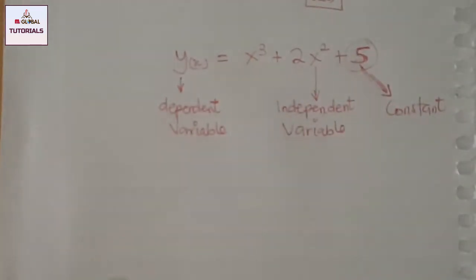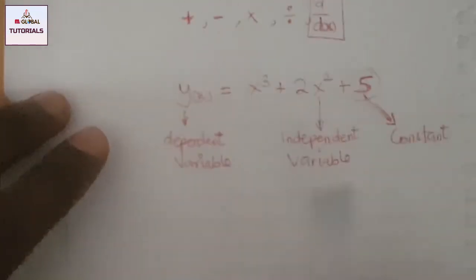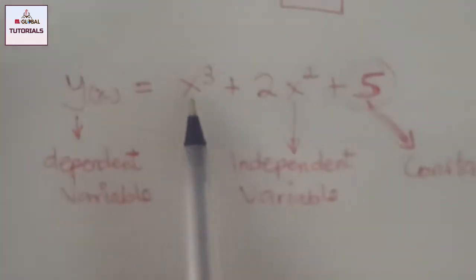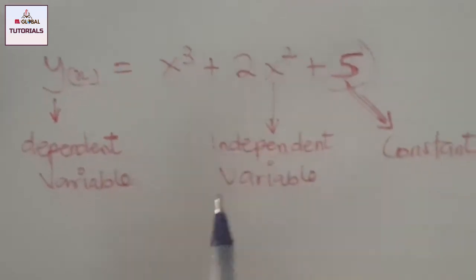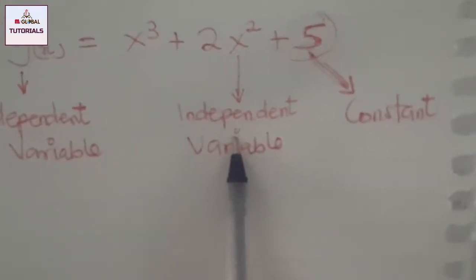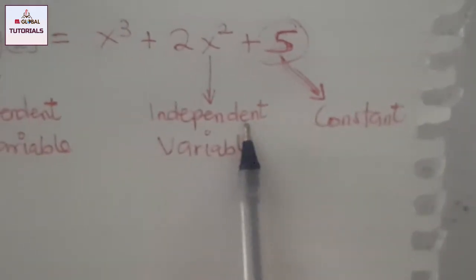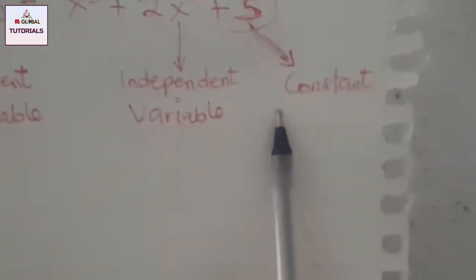The five is called a constant because it's not attached to any variable. Even if it were 20, 25, or 30 — any number not attached to a variable is still a constant. The dependent variable depends on x to find its values, and x is the independent variable. The five is constant because it's not attached to the independent variable.